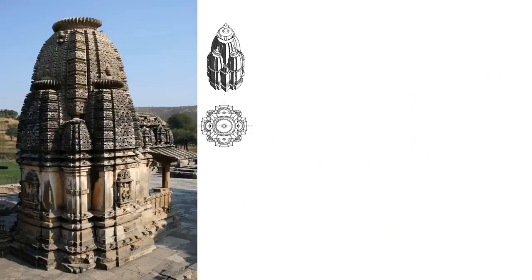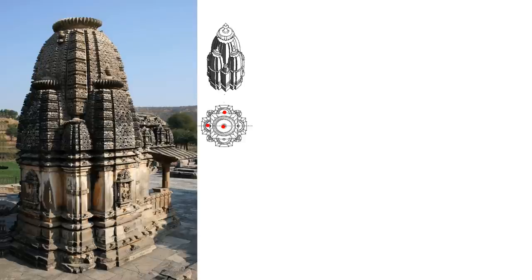A typical way in which Shikari temples are classified in the texts is in terms of the number of andakas — that is the number of amalakas on top of the various shikaras. The prasada is conceived as four-sided, a perfect symmetrical form, regardless of any porch or mandapa in front. So this type is navandaka — it has nine andakas.